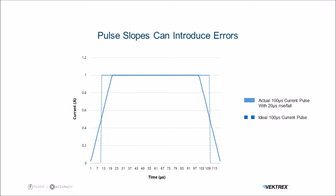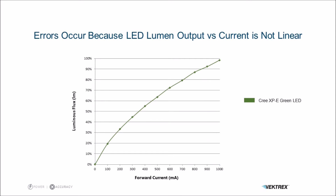Does this matter? At first it might seem it doesn't, because geometrically the trapezoid shape has the same area as the square shape. But in fact it does matter, because LED output is not exactly linear. Here's an example curve for a Cree XPE green LED, and you can see it curves quite far away from linear — at 50% current you get 64% flux. So that curvature will yield an error in the overall measurement.